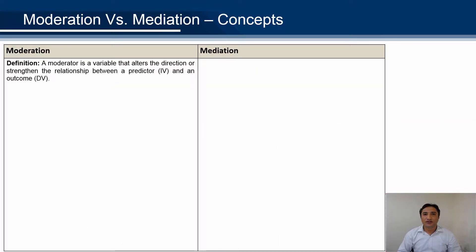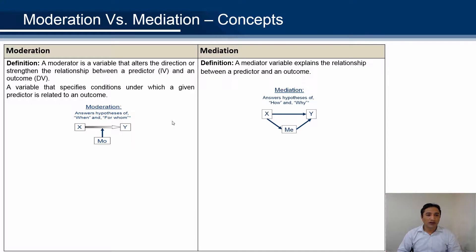Now, what is moderation? A moderator is a variable that alters the direction or strength between the independent variable and the dependent variable. On the other hand, a mediator is a variable that explains the relationship between predictor and outcome. Moderation answers 'when' and 'for whom' questions, and mediation answers 'how' and 'why' questions.